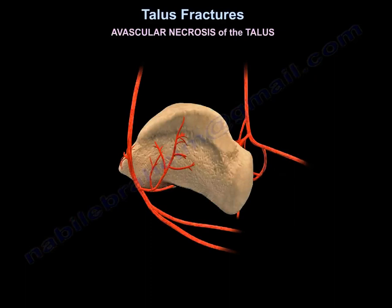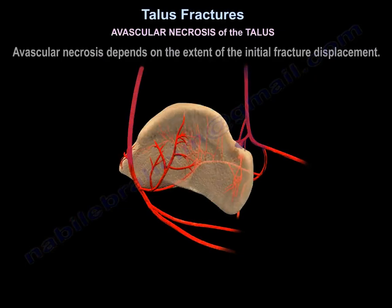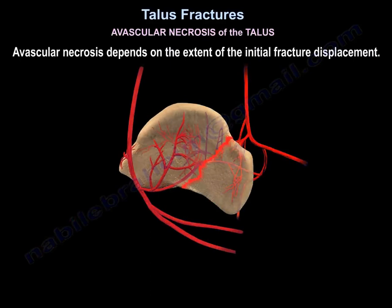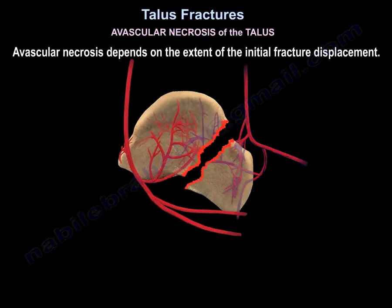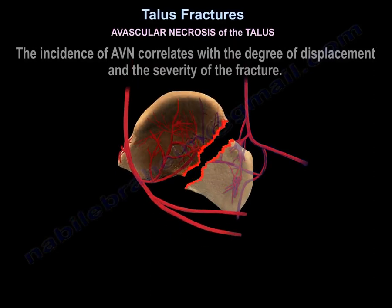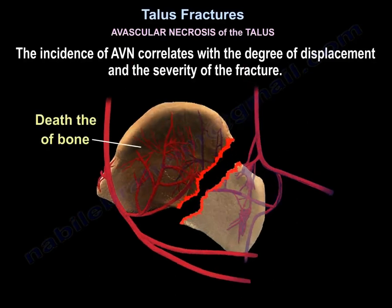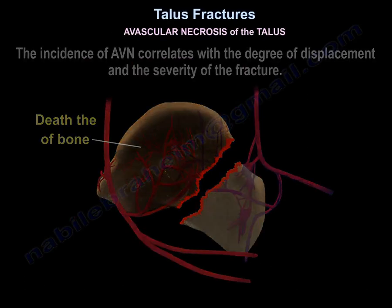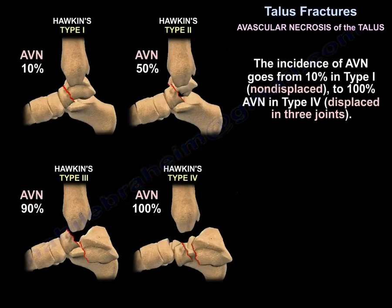Avascular necrosis of the talus depends on the extent of the initial fracture displacement. The incidence of AVN correlates with the degree of displacement and severity of the fracture — from 10% in type 1 (non-displaced) to 100% in type 4 (displaced in three joints).